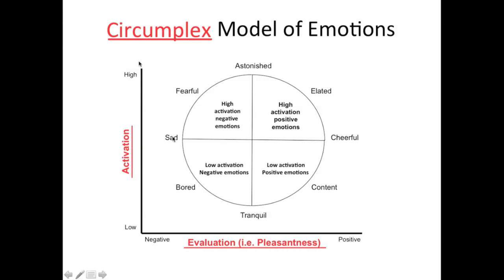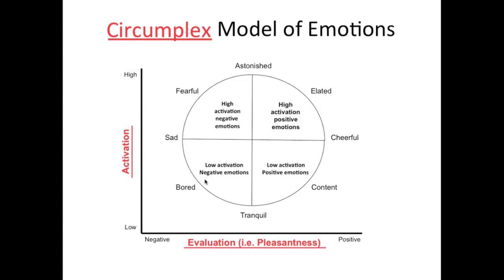Looking at the axes of activation and evaluation, we can carve the circumplex model into four quadrants. Top left: high activation, negative emotions — fearful, astonished, and sad. Top right: high activation, positive emotions — elation, astonishment, and cheerfulness. Bottom right: low activation, positive emotions — being contented is very positive but much lower activation than elation. Bottom left: low activation, negative emotions — boredom, tranquil, and sadness to lesser degrees.